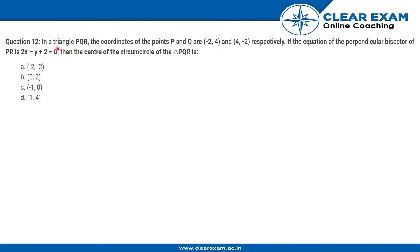If the equation of the perpendicular bisector of PR is 2x - y + 2 = 0, then the center of the circumcircle of the triangle PQR is...